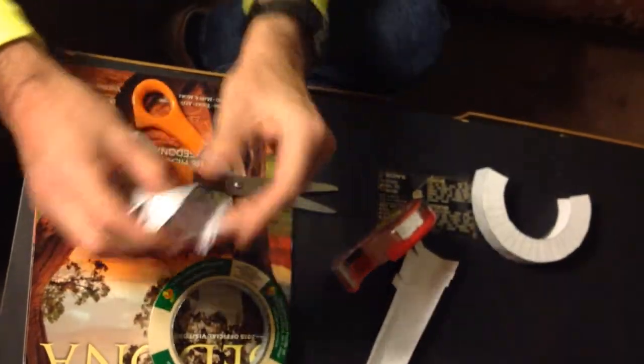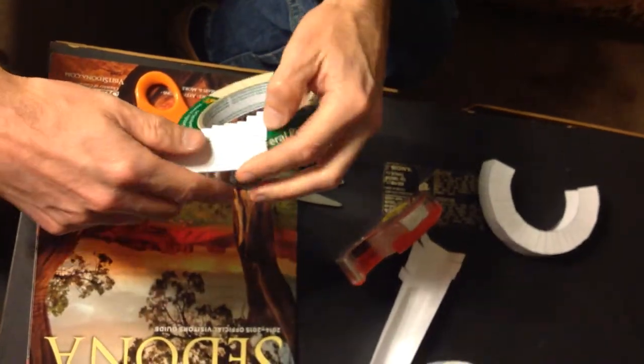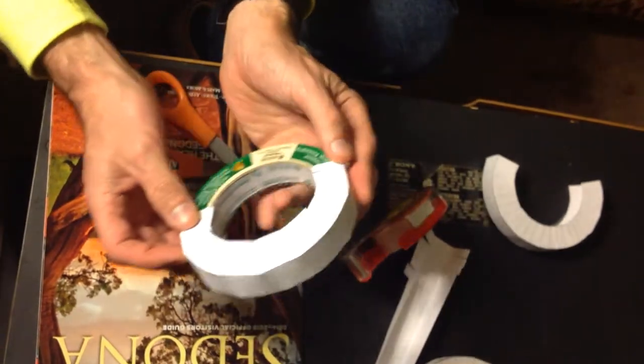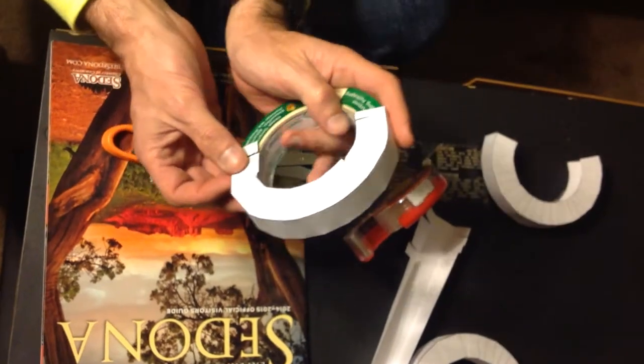Once we get this, we take a roll of masking tape and we're gonna use it to make the shape of a circle. You see this? Actually, it's half a loop.